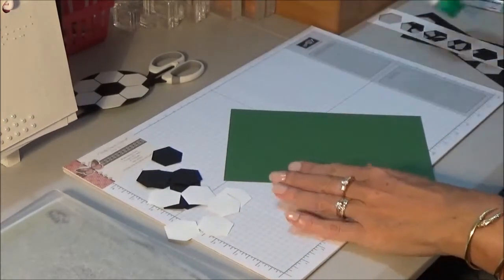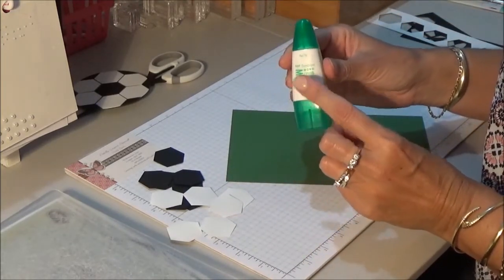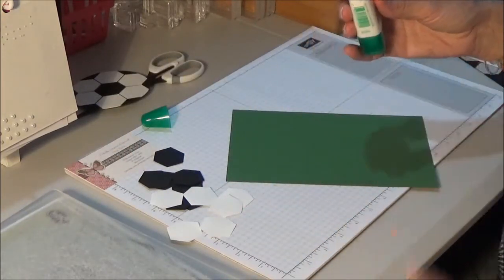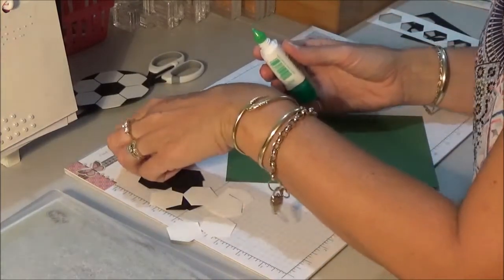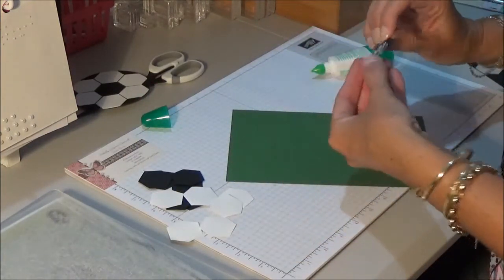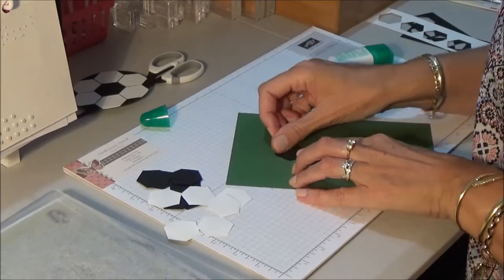All right. And what I'm going to use to glue them on is the Tombow glue. So we're going to start off with a black hexagon. Just glue that down.